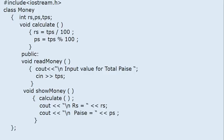Consider one more program. This is the reverse of the previous one. In the previous program, we read values of rupees and paise and calculated total paise. Now we are reading total paise and from it calculating rupees and paise. For example, if total paise is 1060, that is 10 rupees and 60 paise. We divide by 100 because 100 paise equals 1 rupee. In read money we read total paise, then calculate it, and before displaying in show money, we call calculate first.